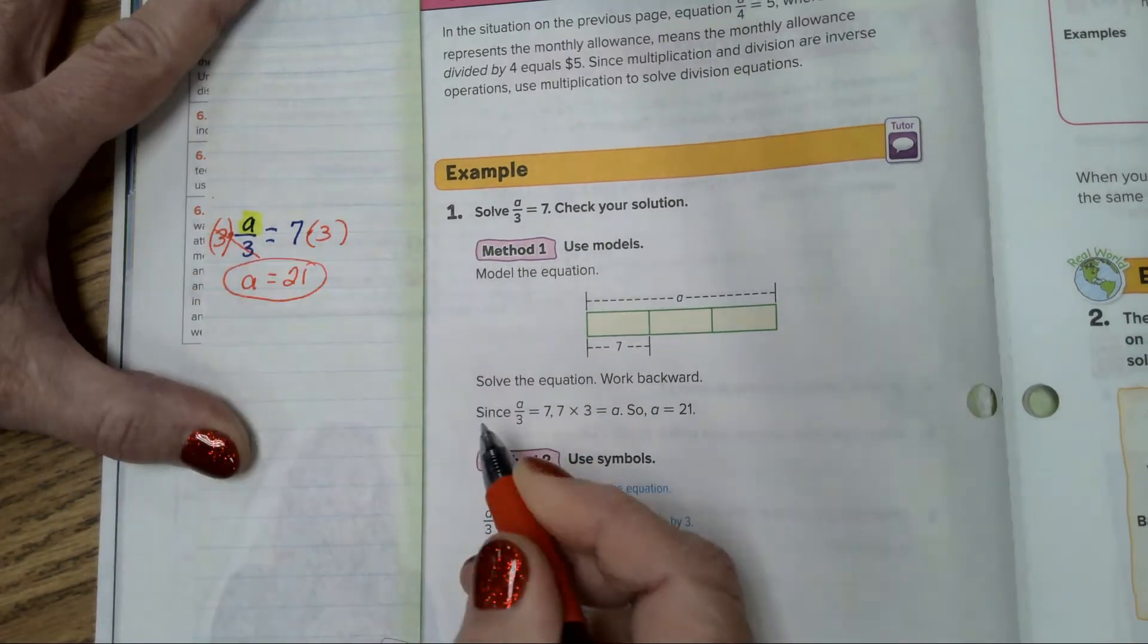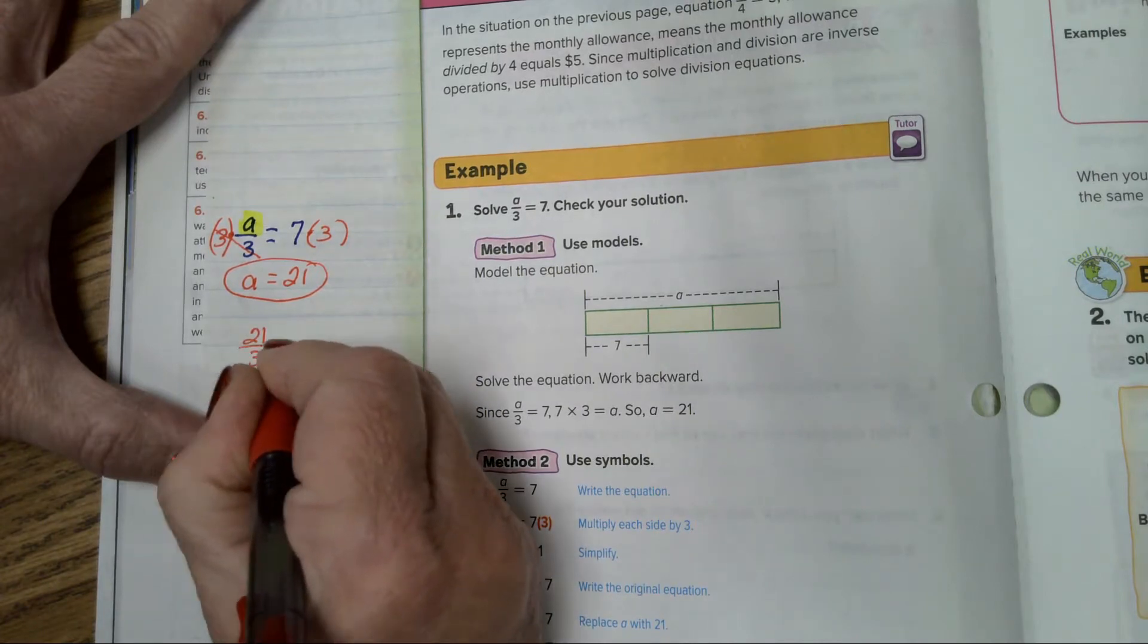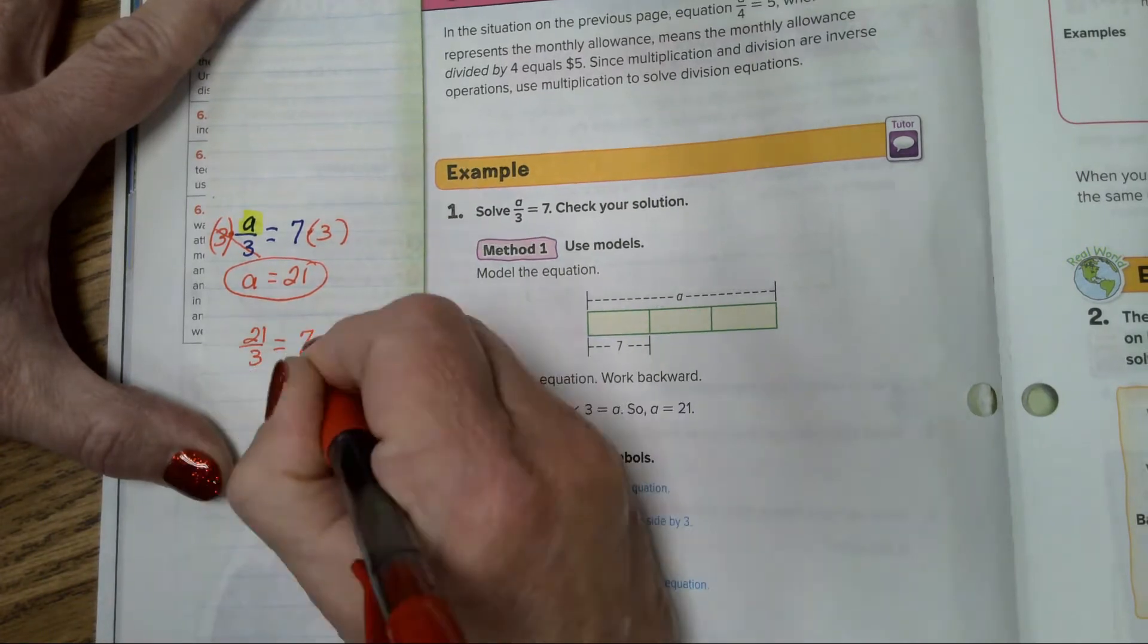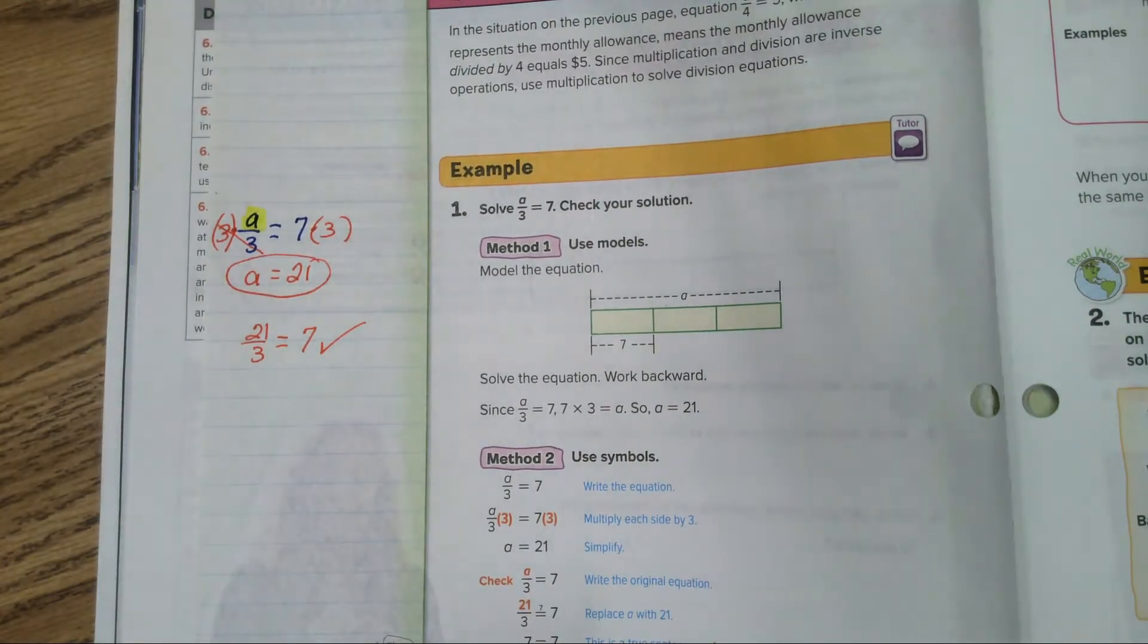So you're going to multiply both sides by 3. That cancels, and you end up with A equals 21. Then they're going to want you to do a check step. The check step: 21 divided by 3, does that equal 7? Why, yes it does. And you have your check step.